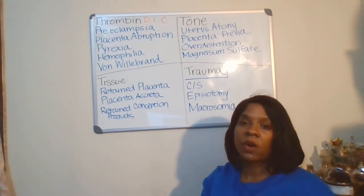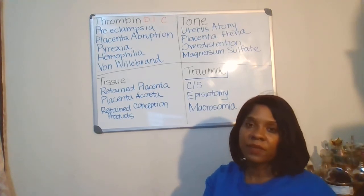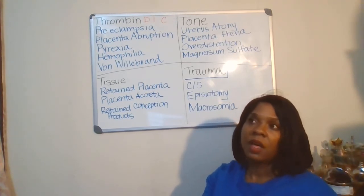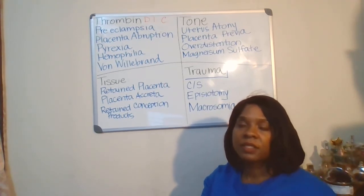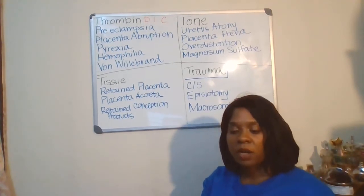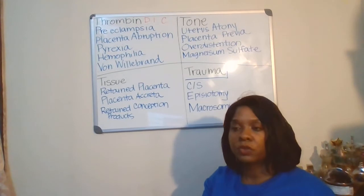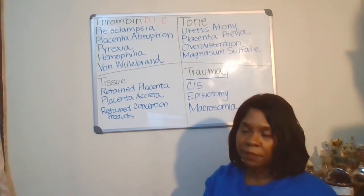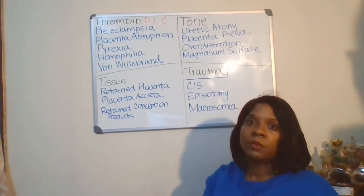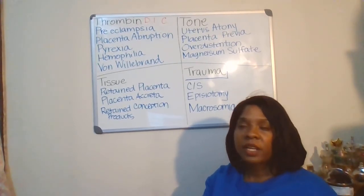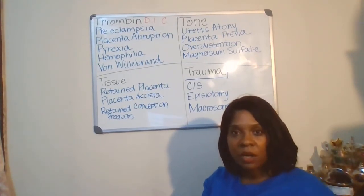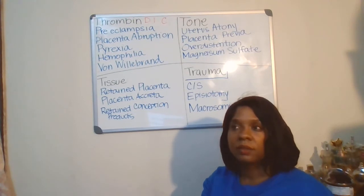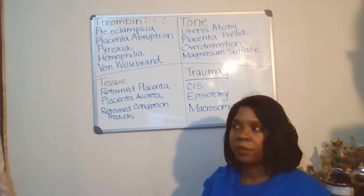So the first T — we already know what thrombin means, we learned about that in fundamentals. The first T is in regards to blood count. So what conditions can cause thrombin problems?